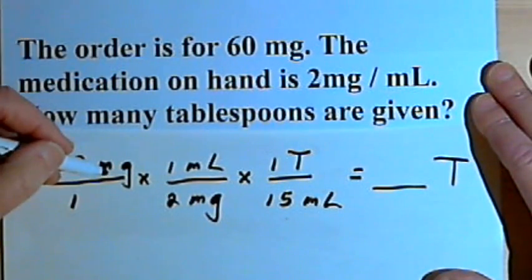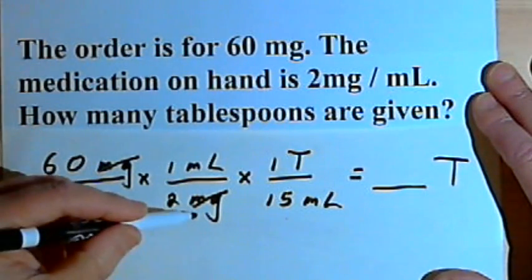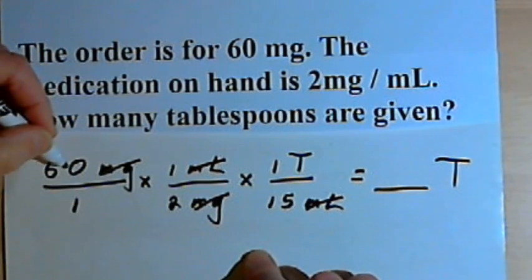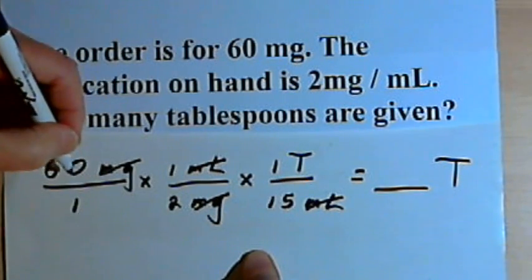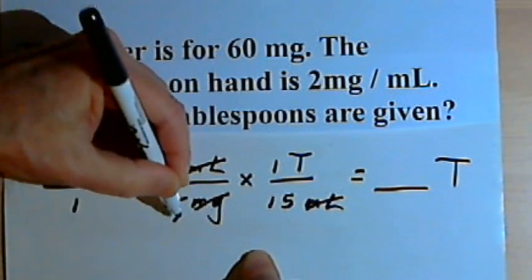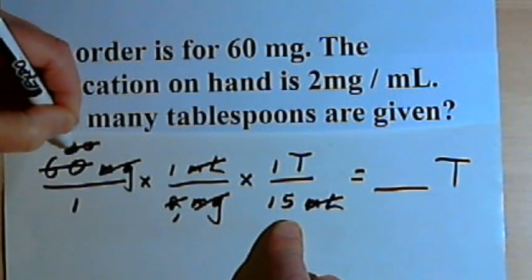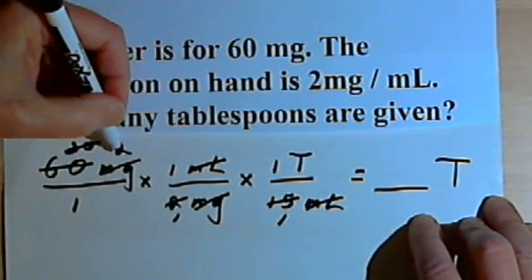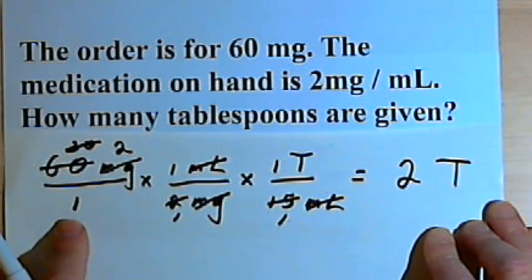Now let's see if we can cancel out all the units except for the tablespoons. The milligrams will cancel — I've got milligrams in both the numerator and the denominator. The milliliters will cancel also. Then I've got 60 in the numerator and a 2 and a 15 in the denominator. I can simplify: divide 60 and 2 both by 2, giving 30 and 1. Then divide 30 and 15 both by 15, giving 2 and 1. Multiplying across: 2 times 1 times 1 tablespoon is 2 tablespoons.